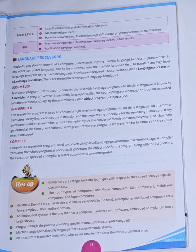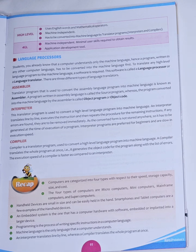The larger device can be a television, microwave, washing machine, etc. Embedded system is embedded inside larger devices. We also studied about what is a program and what is programming. A program is a set of instructions which will instruct the computer what to do. Programming is the process of writing specific instructions in a computer language.